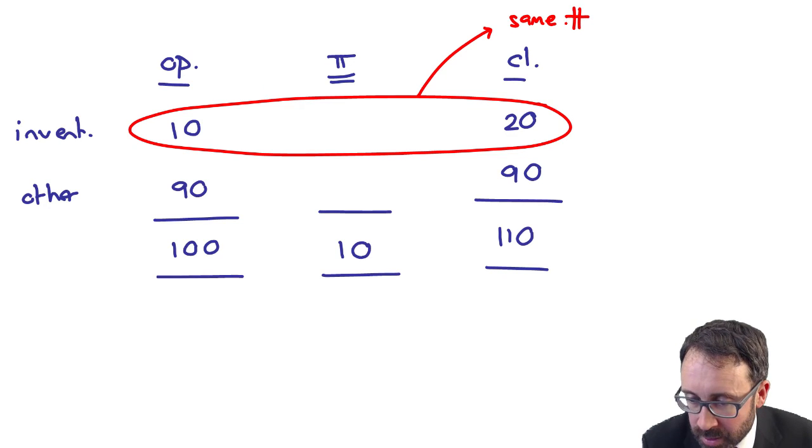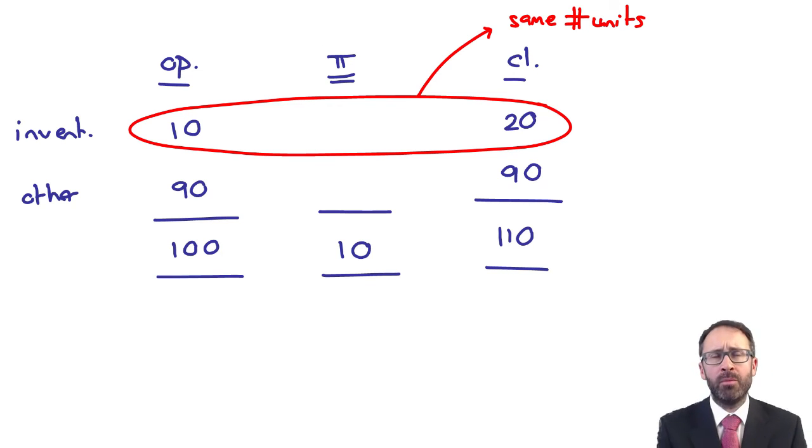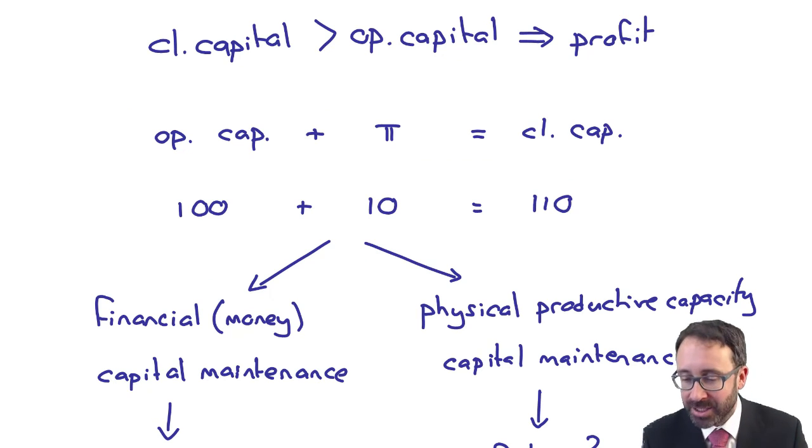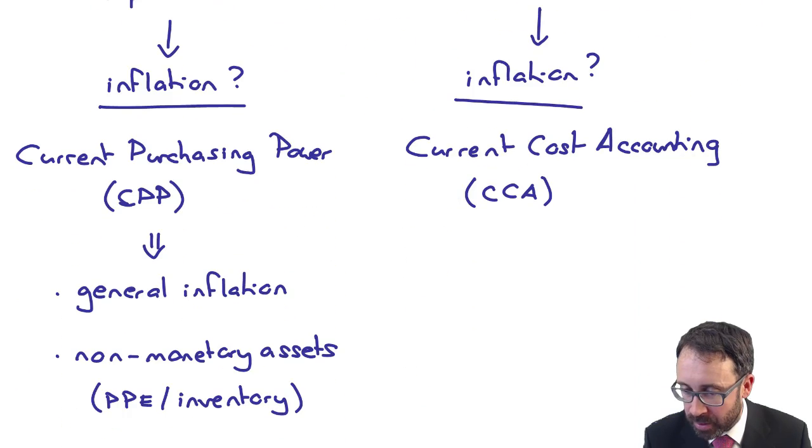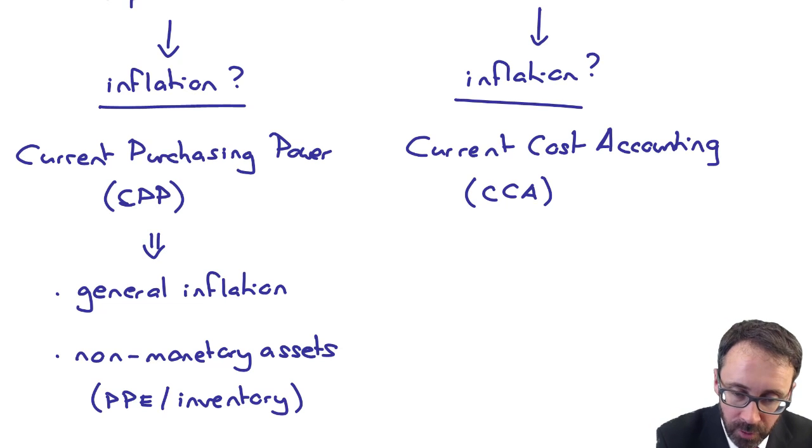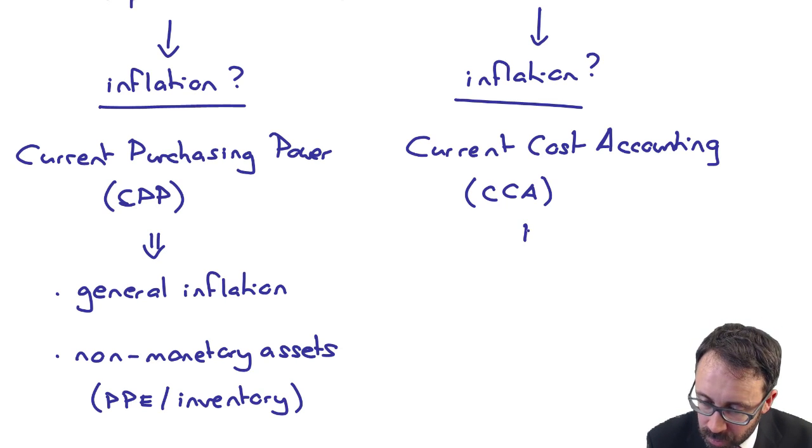Can we purchase the same number of units as what we could previously, as at the start of the year? If we can't, we need to make an inflationary adjustment to go through there and reflect the number of units that we can actually physically produce, or if you like, physically go through and operate with within the business. Okay, so what you're going to go through and do there with regards to your current cost accounting,